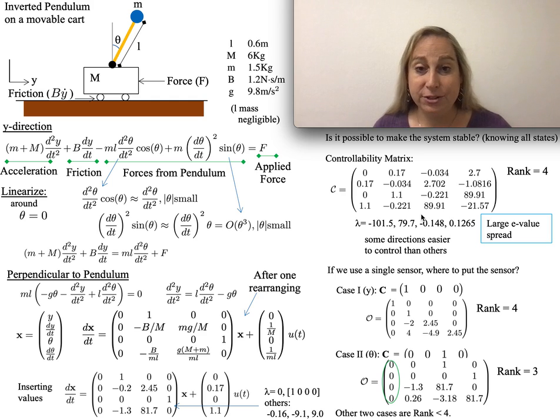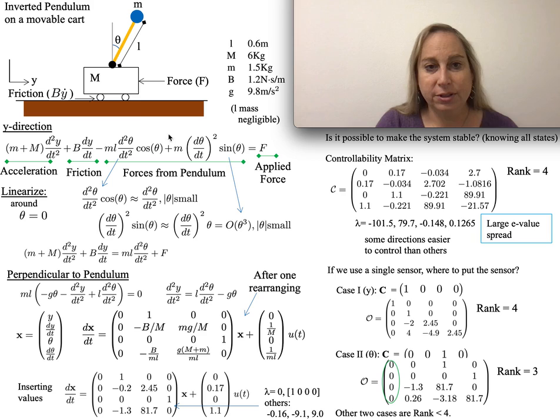Two eigenvalues are very strong and two are a lot smaller. This is something you want to pay attention to in practice, because the angles that might be smaller might be the ones you need to control. You look at the eigenvectors and see where that's going.